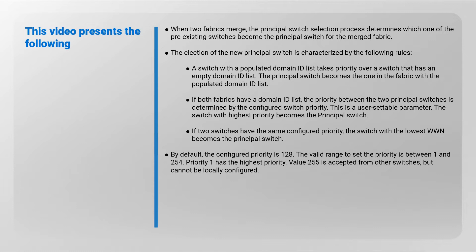The election of the new principal switch is characterized by the following rules. A switch with a populated domain ID list takes priority over a switch that has an empty domain ID list — the principal switch becomes the one in the fabric with the populated domain ID list. If both fabrics have a domain ID list, the priority between the two principal switches is determined by the configured switch priority, which is a user-settable parameter.